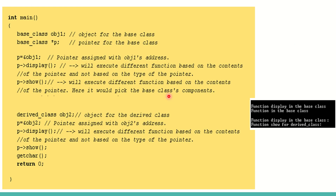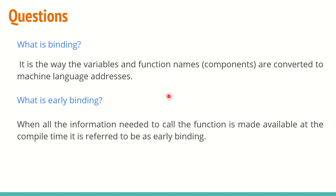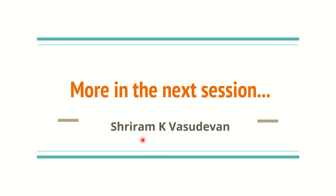Early binding can cause issues when you have function overriding or redefined content in derived classes. Early binding is done during compile time — the complete information is made available at compile time and things are bound properly. We have completed today's session and will continue with more content in the next session, which will be posted shortly.